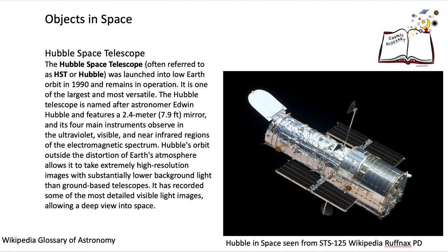The Hubble Space Telescope looks into the universe for astronomers to see distant objects. It has an advantage over Earth-based telescopes because it doesn't have to look through the atmosphere first.